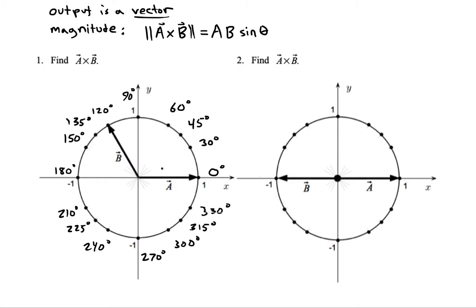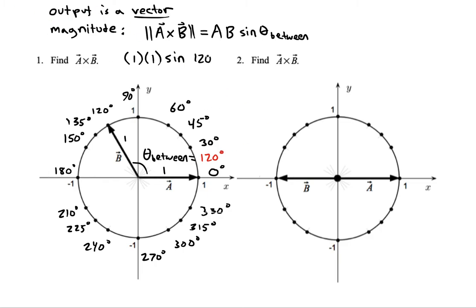For this first one, the lengths of A and B are just 1 because it's a unit circle. So we want 1 times 1 times the sine of the angle between them — that's the theta between. The theta between here is going to be 120. So A cross B magnitude is 0.866, which is radical 3 over 2.